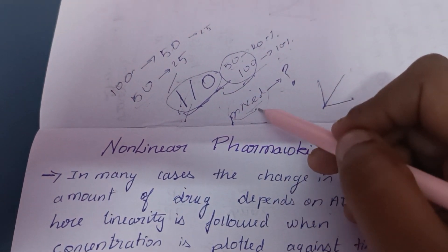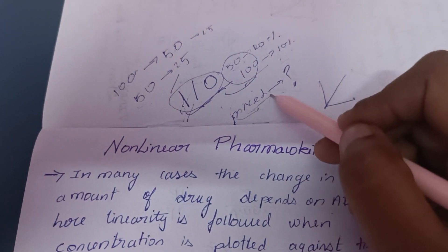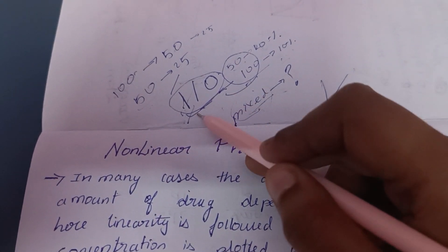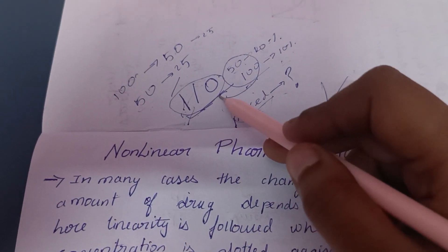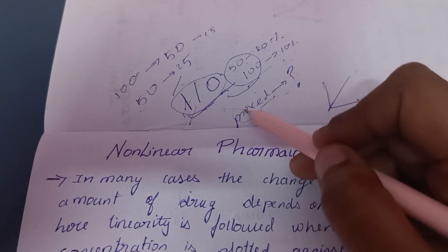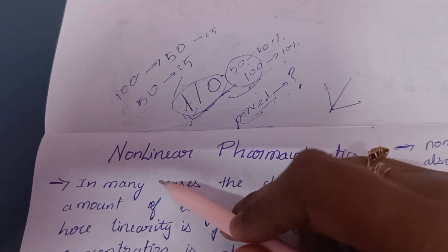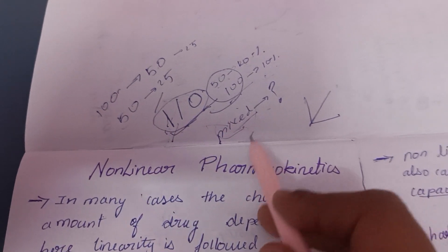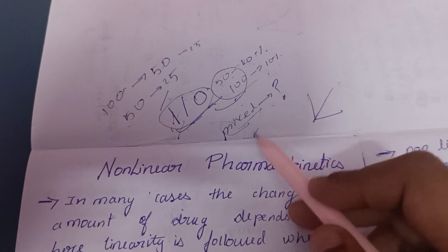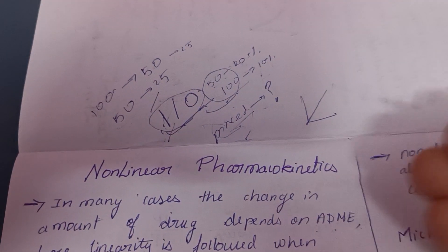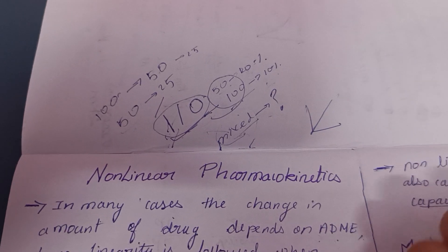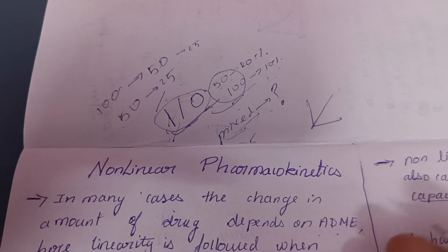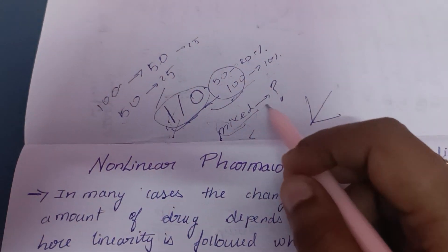Now, what is mixed order kinetics? Mixed order kinetics — the first order and zero order combined — that is non-linear pharmacokinetics. So mixed order covers the rate of absorption, distribution, metabolism, and excretion. That is how you find it.